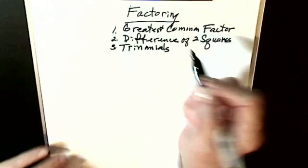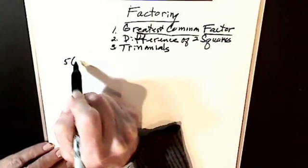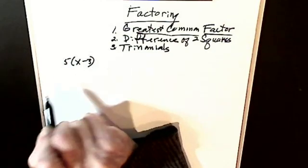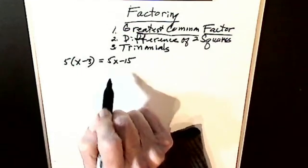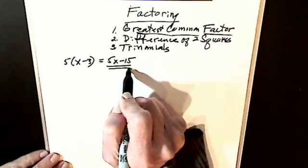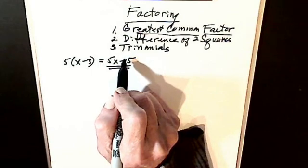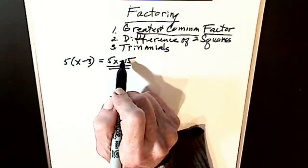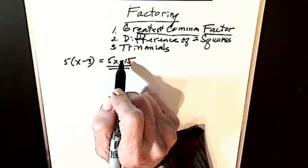You already know distributive property. So if I have five times (x minus 3), by distributive property I'm going to get 5x minus 15. Factoring is going backwards. We start with the answer and the question is: I want to know two quantities that multiply together to give me 5x minus 15. It's just like if I said to you two times three is six — if I said give me two factors of six, it's going backwards. What I'm asking for is two numbers that multiply together to give me six. You could have one and six. You could have two and three.